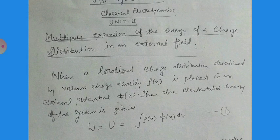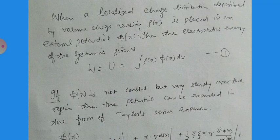We start with the energy of the multipole expansion. When a localized charge distribution described by the volume charge density ρ(x) is placed in an external potential φ(x), the electrostatic energy of the system is given by W = ∫ρ(x)φ(x)dv. If φ(x) is not constant but varies slowly over the region, the potential can be expanded as a Taylor series.